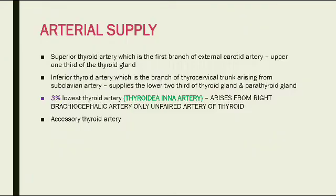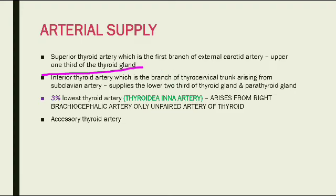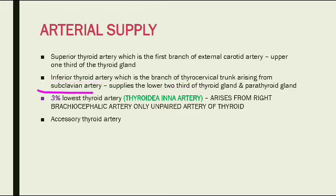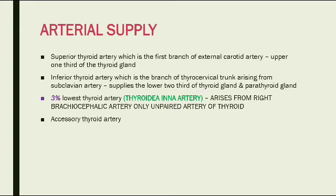For the arterial supply of the thyroid gland: the superior thyroid artery is the first branch of the external carotid artery and supplies the upper one-third of the thyroid gland. The inferior thyroid artery is a branch of the thyrocervical trunk, which arises from the subclavian artery. The inferior thyroid artery supplies the lower two-thirds of the thyroid gland and also supplies the parathyroid glands.